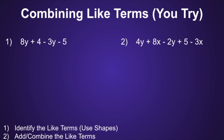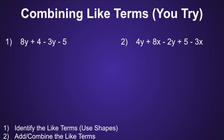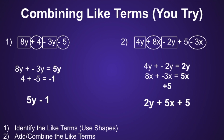Now I want you to try. You have two different expressions. I want you to identify the like terms and then write the simplified expressions. I would recommend you pause the video now and resume when you're ready to see if your solutions are correct. Okay, let's take a look at these solutions. For the first expression, 8y plus 4 minus 3y minus 5, the simplified expression would be 5y minus 1. And in the second expression, 4y plus 8x minus 2y plus 5 minus 3x, the simplified expression would be 2y plus 5x plus 5.